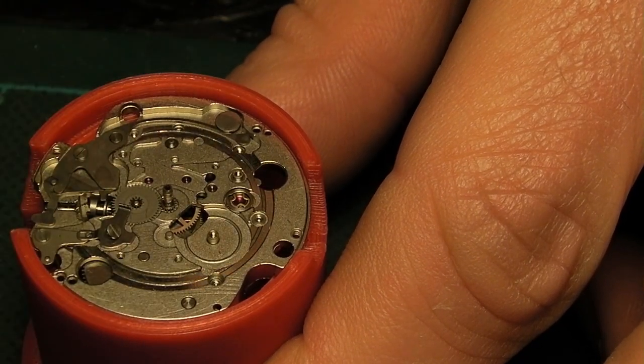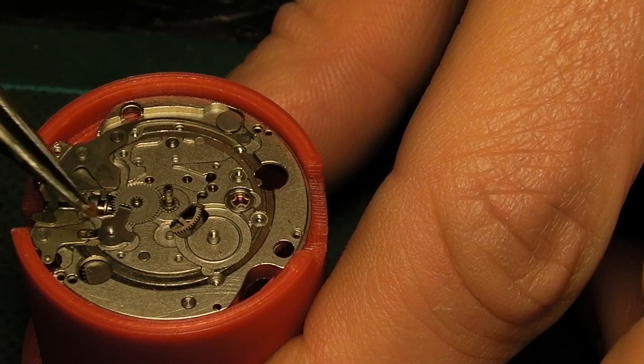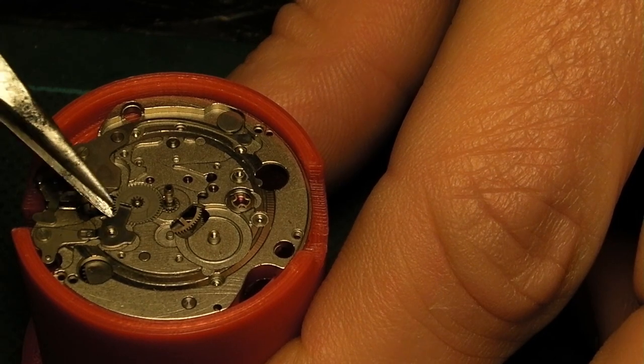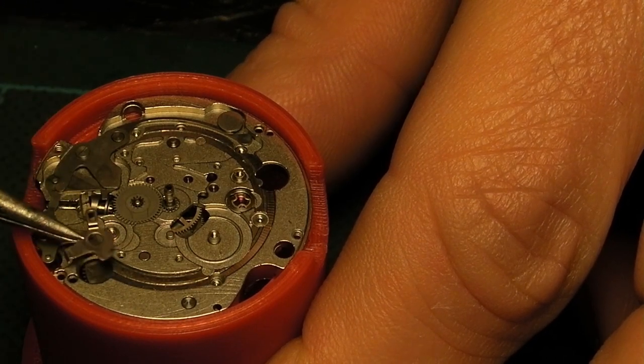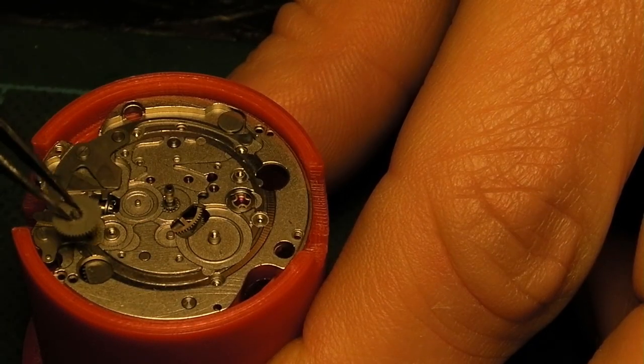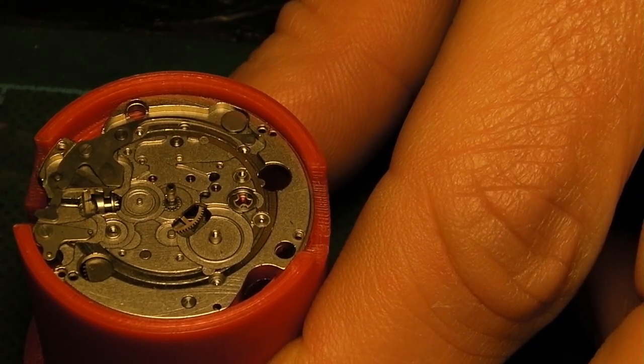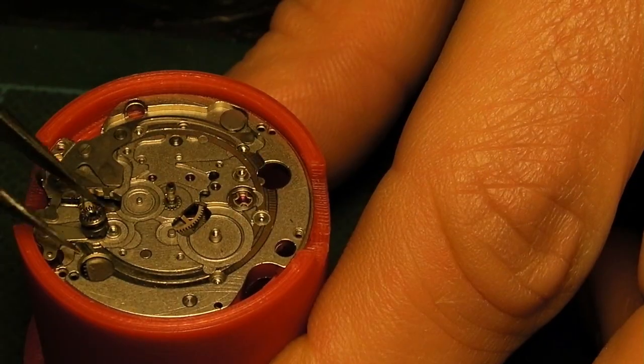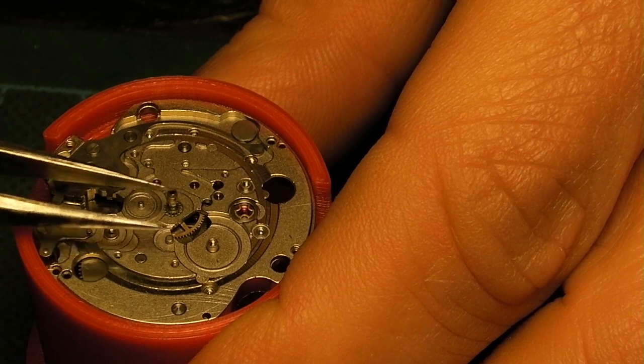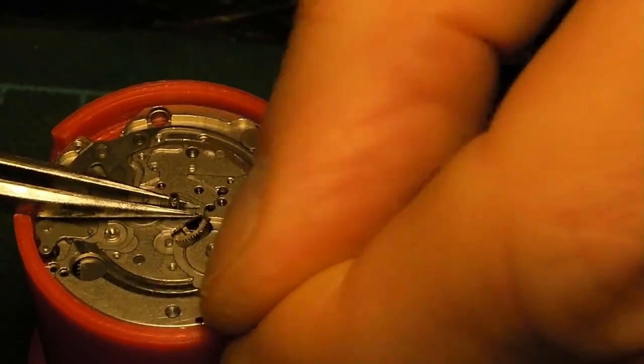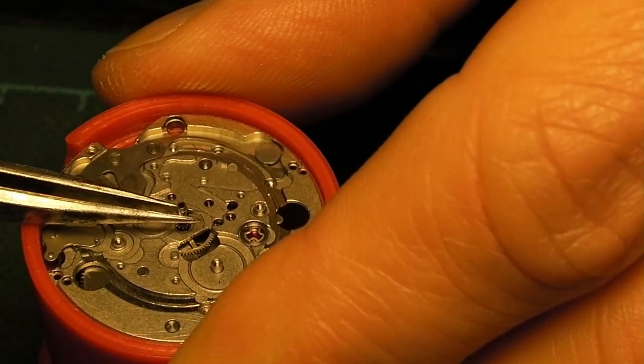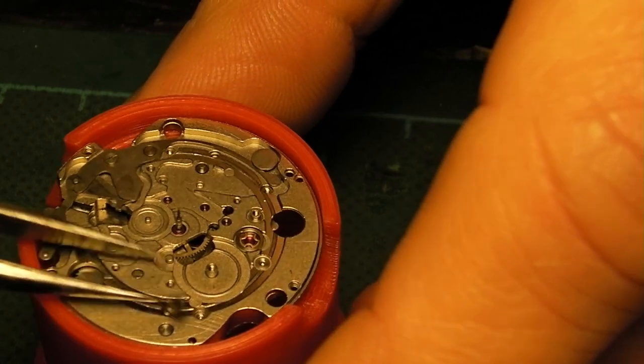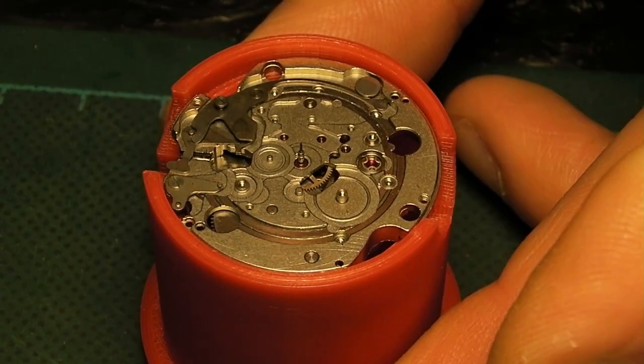Here I'm removing the rapid day advance pusher which is retained by a screw and is a single piece of metal with a slot actuated by the spring-loaded pusher. That's followed by the minute wheel and then the clutch. There is no winding pinion on this movement because it is automatic wind only. Here I'm popping off the cannon pinion. You can get specialized cannon pinion removers but I tend to use tweezers.